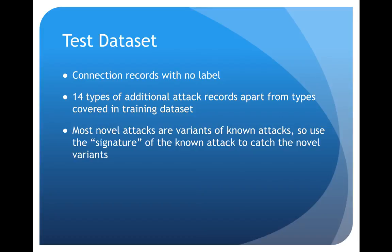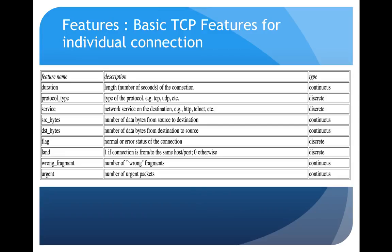In the test dataset there are 14 additional types of attacks which are not present in the training. How do I identify these attacks which are not present in the training dataset? Well, every new attack is normally a variant of a past attack, so if you have a signature of the past attack you can easily identify the new attack types.